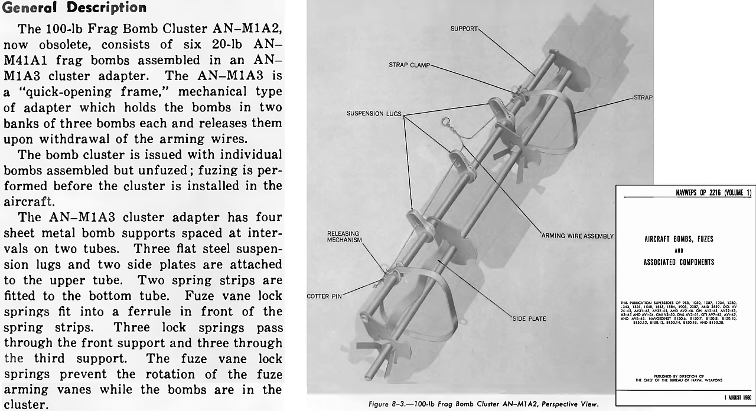This chart provides a description and release sequence of the six M41s from the M1A2 cluster, from a 1960 Chief of Bureau of Naval Weapons document titled Aircraft Bombs and Fuses and Associated Components. The M1A2 and A3 clusters are the quick opening frame type. The bombs are released from the frame by withdrawing the arming wire from the release mechanism. The strap release mechanism is located here.